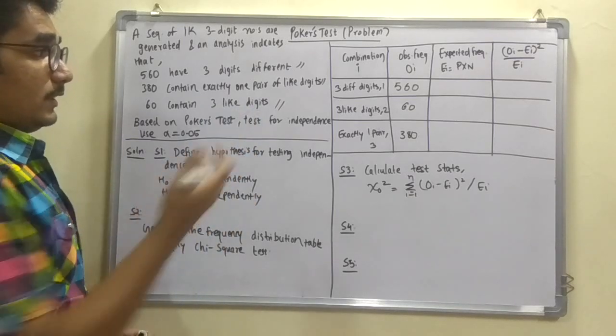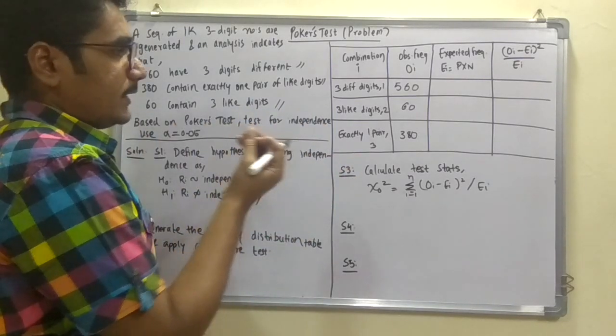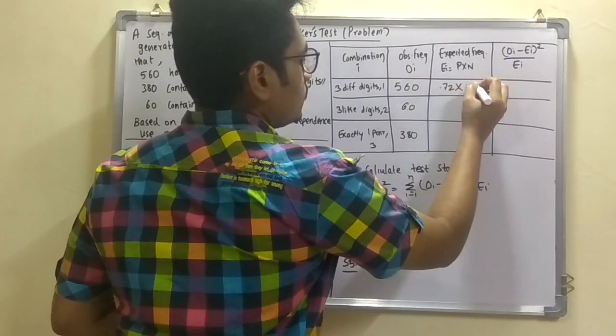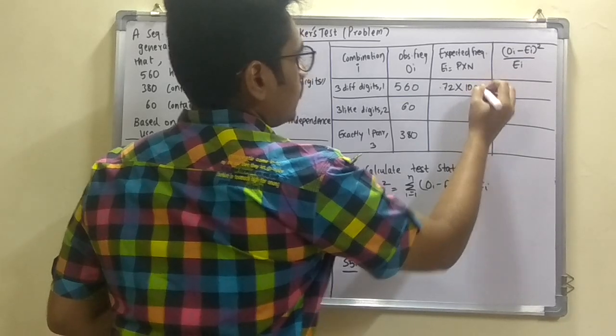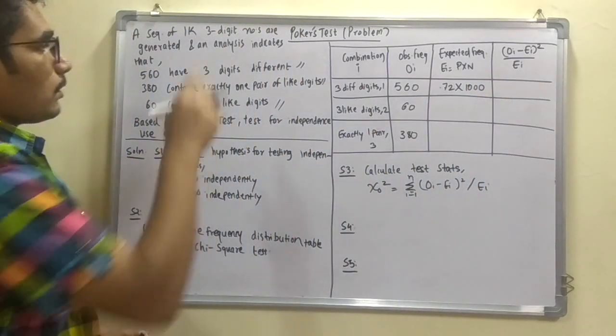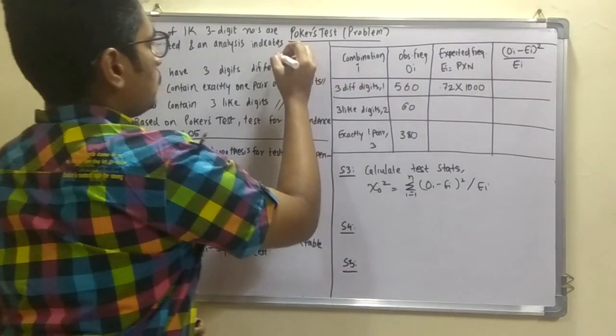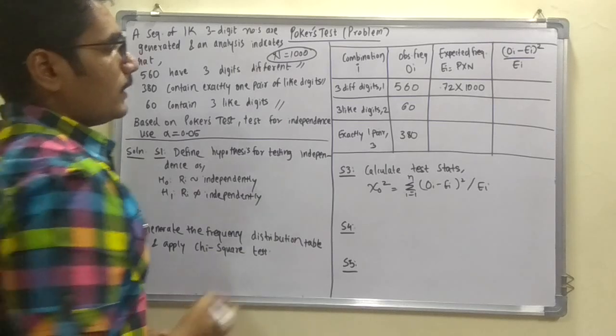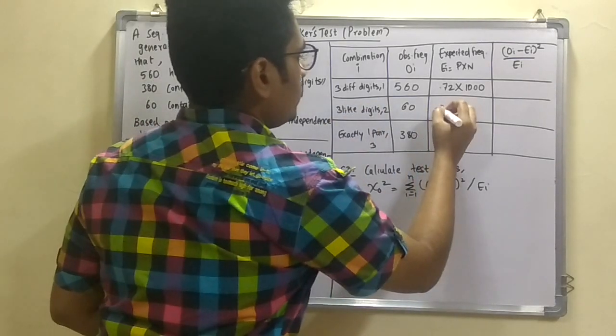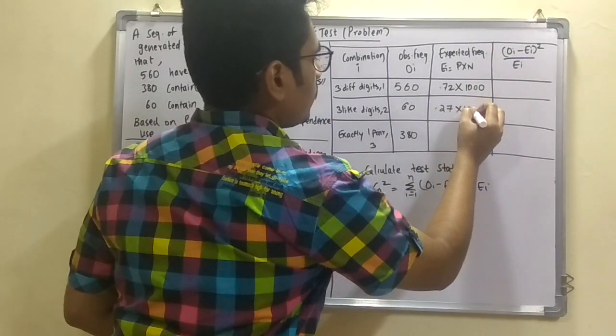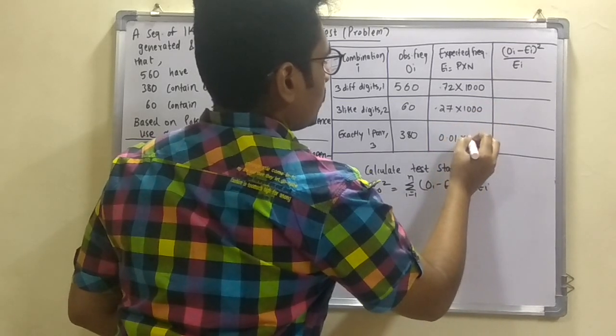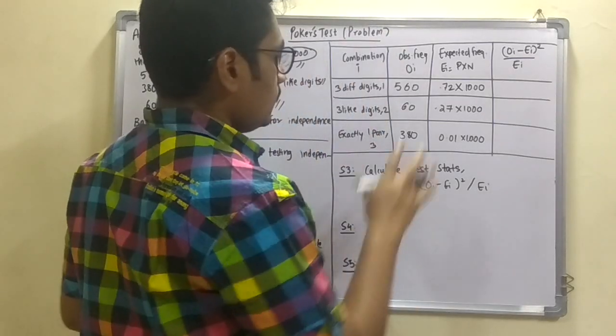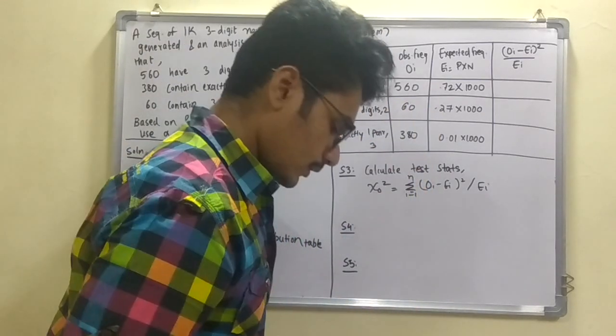That is 3 different digits. If you remember for 3 different digits we had 0.72. So multiply 0.72 with this 1000. That is we have this 1000 number of digits here. So that is N. So N you can get from here that is 1000. That is the capital N. And for 3 like digits you have 0.27 multiplied by 1000. And this is 0.01 multiplied by 1000.